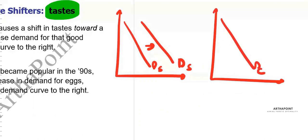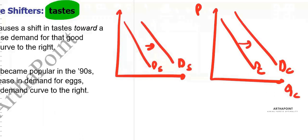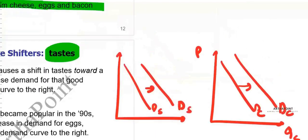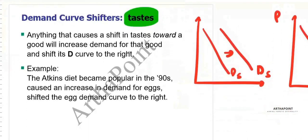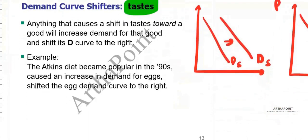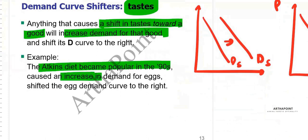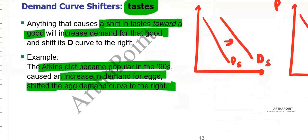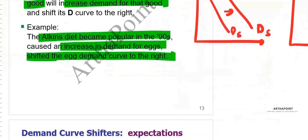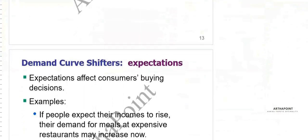This has nothing to do with the price or quantity of coconut water — people are simply growing their taste and preferences towards it. Anything that causes a shift in taste towards a good increases the demand for that good. For instance, a diet trend causing increased demand for eggs shifts the demand curve of eggs to the right.